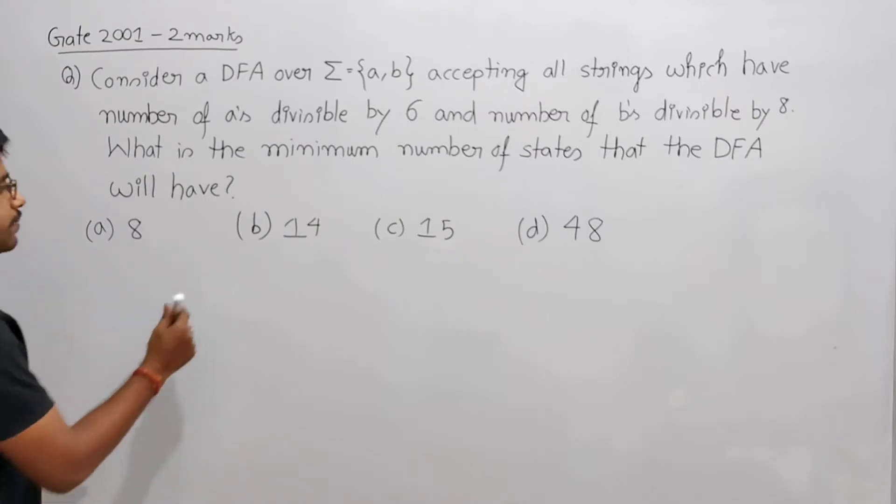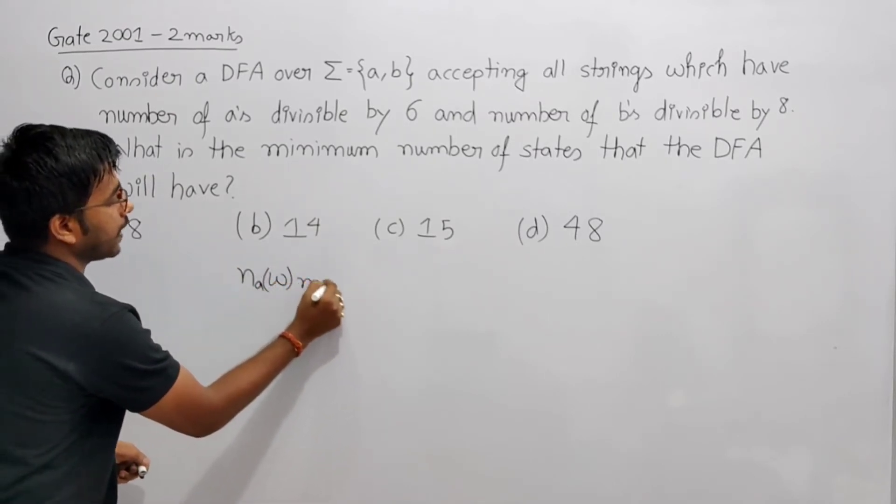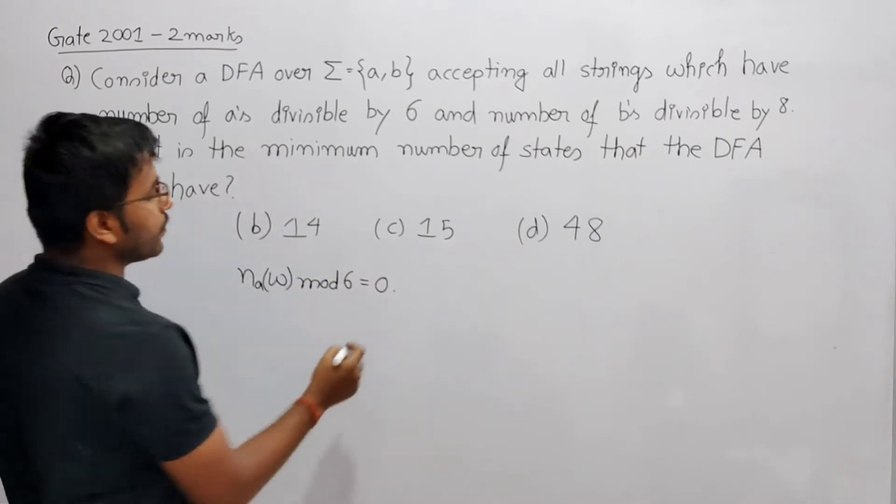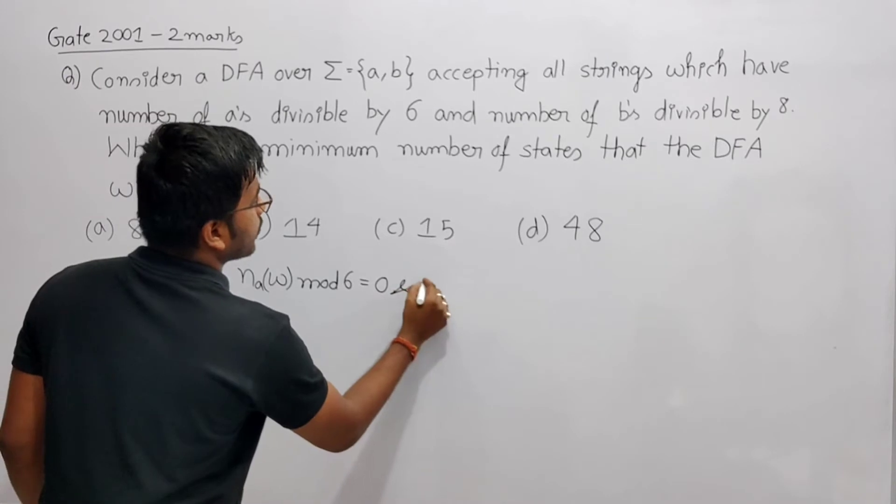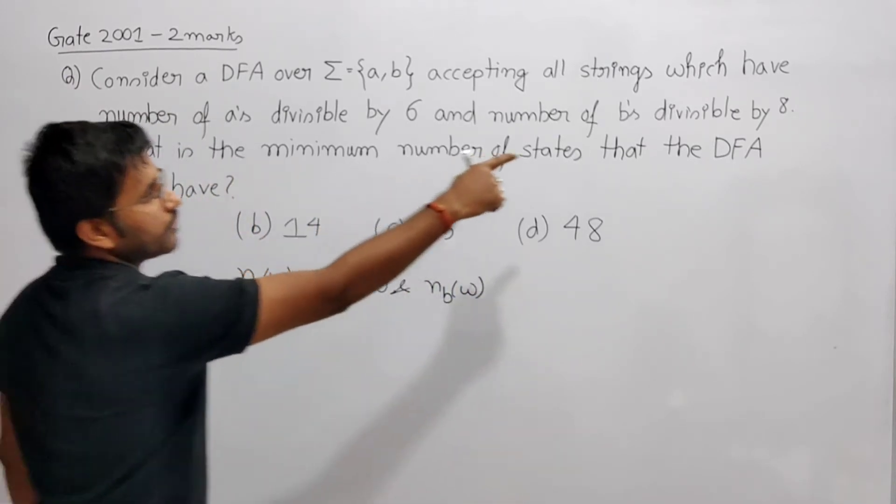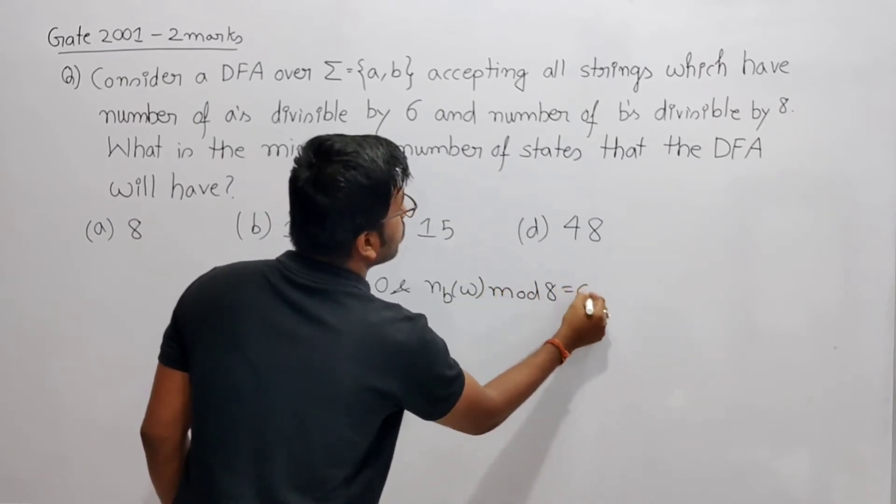divisible by 6, so number of a in w mod 6 equals 0, and number of b's in w when you divide by 8, mod 8 equals 0.